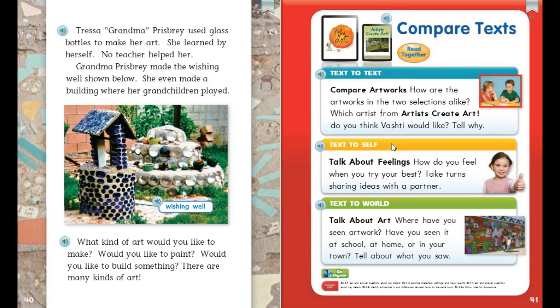For text-to-world, where have you seen artwork? Have you seen it at school, at home, in your town? Talk about what you saw. So that's text-to-text, text-to-self, and text-to-world — and then you are done with your anchor for today.